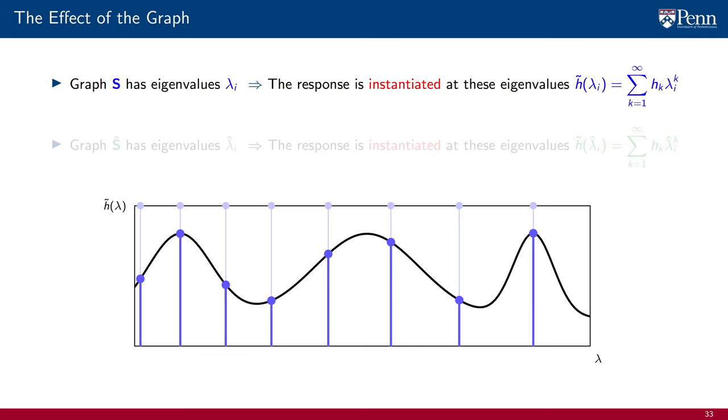The graph has a specific set of eigenvalues lambda_i. The frequency response is instantiated at them. When the filter with coefficient hk is run on this graph, the effect it has on a signal depends on the values of the frequency response evaluated at the lambda_i eigenvalues.